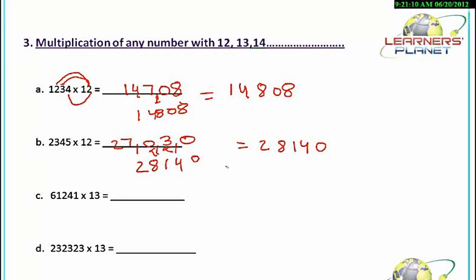Let's take another example. Here we are going to multiply 61241 into 13. The method is similar as the previous one. In this case, we will be multiplying the numbers by 3 and then we will be adding them to its right digit. So here we are going to multiply 1 and 3, 1 into 3 will give us 3.